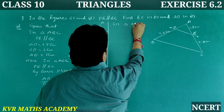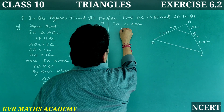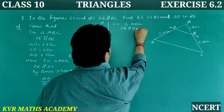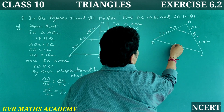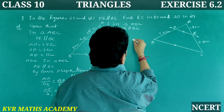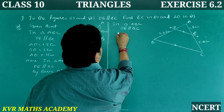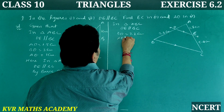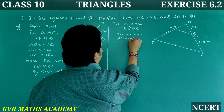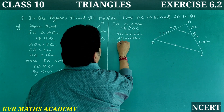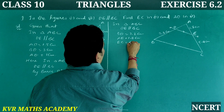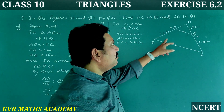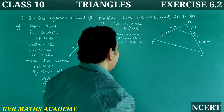Second one — in triangle ABC, DE is parallel to BC. Given: BD is equal to 7.2 centimeters, AE is equal to 1.8 centimeters, and EC is equal to 5.4 centimeters. We have to find AD.